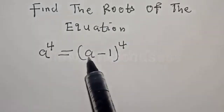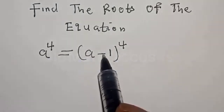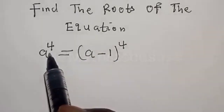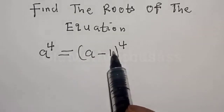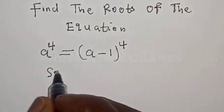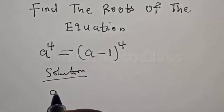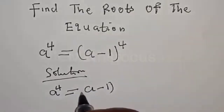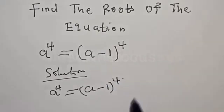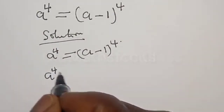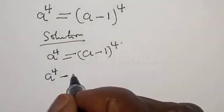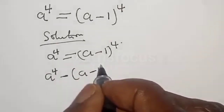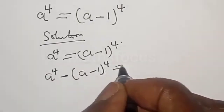A raised to power 4 is equal to A minus 1 raised to power 4. I want to quickly find the roots of this equation. A raised to power 4 equal to A minus 1 raised to power 4. So we rewrite it as A raised to power 4 minus A minus 1 raised to power 4 equal to 0.